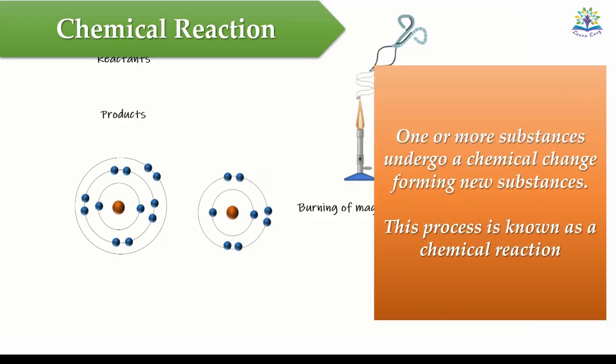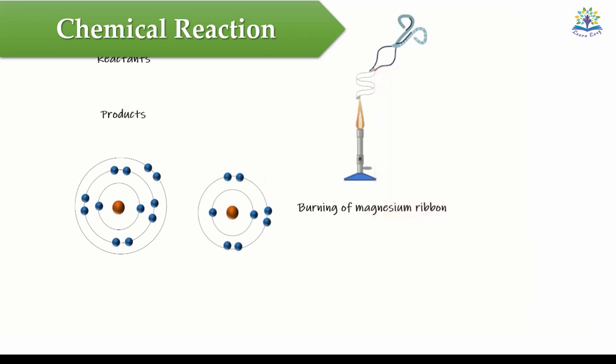A chemical reaction is a chemical change undergone by one or more substances forming new substances. For example, when magnesium ribbon burns in air, the magnesium and oxygen combine to form magnesium oxide. Here, magnesium transfers two of its valence electrons to oxygen thereby forming a new bond and becoming a new substance, magnesium oxide.